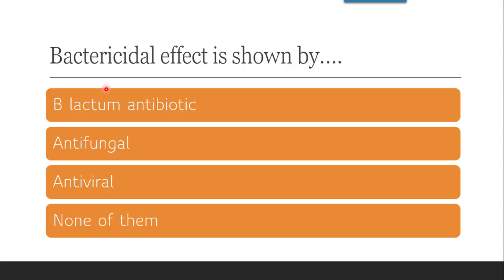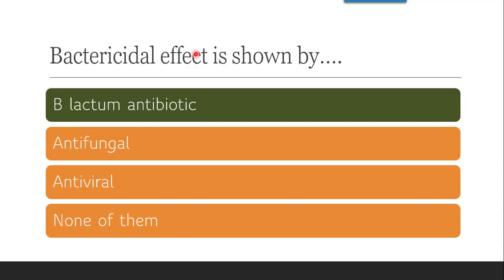The next question is: bactericidal effect is shown by — beta-lactam antibiotic, antifungal, antiviral, or none of them? The correct answer is beta-lactam antibiotic. Beta-lactam antibiotics such as penicillins act by interfering with cell wall synthesis. Since cell wall is the protective covering, once it is destroyed there is no chance of survival of the bacteria — so they have a bactericidal (kill) effect.